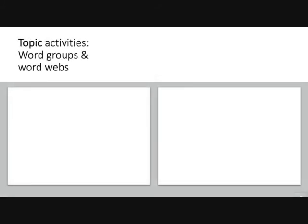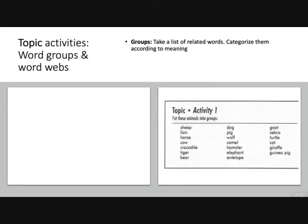The first is teaching by topic. You start with a theme — animals, foods, modes of transport — and use word groups and word webs. For word groups, you take a list of related words and teach students to categorize them by meaning: the kind of food they eat, the place they live, the number of legs, whether they're domesticated or wild. Really great for tactile learners.